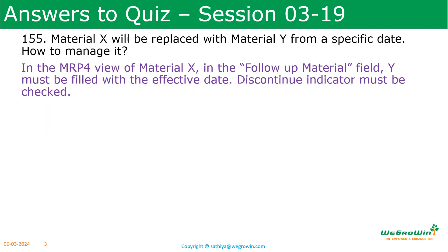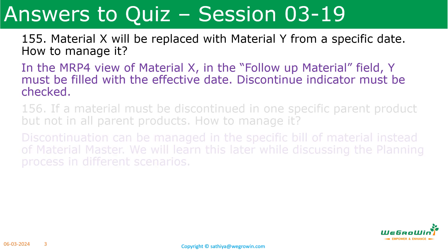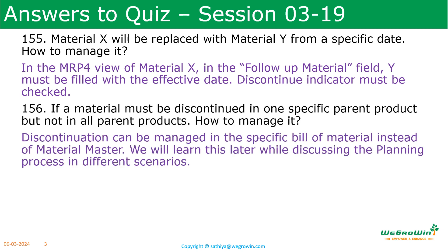If material X will be replaced with material Y from a specific date, how to manage it? In the MRP view of material X, the follow-up material field must be filled with Y, and we also have to fill the effective date, then the discontinued indicator must be checked accordingly. If a material must be discontinued in one specific parent product but not in all parent products, discontinuation can be managed in the specific bill of material instead of the material master overall. We will learn this topic while discussing planning process in different scenarios.